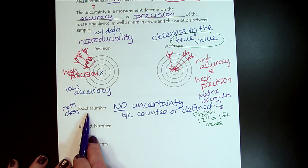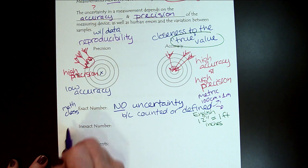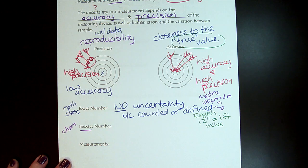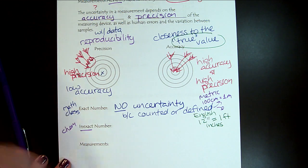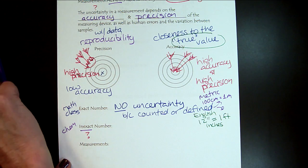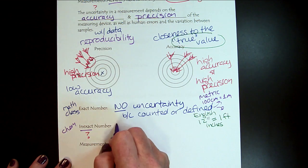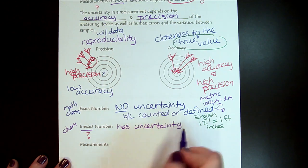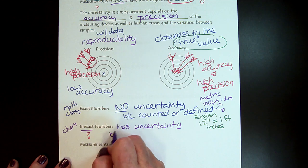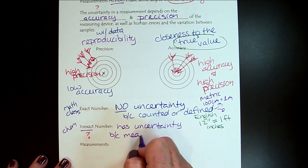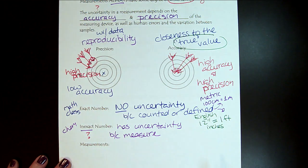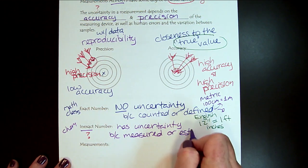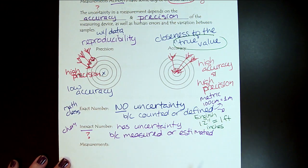We will not have very many exact numbers in this class — we are going to live in chemistry world, because we're going to be making a bunch of measurements, and measurements always have that uncertainty. So an inexact number has uncertainty, and that's okay. We're going to make some guesses, and the reason why is because every time we measure we're going to always guess the last digit, or do some kind of estimation. And that's part of the journey.